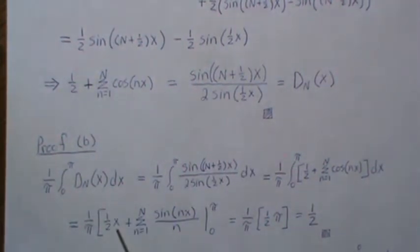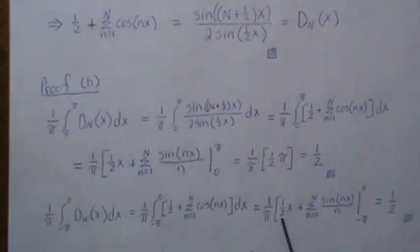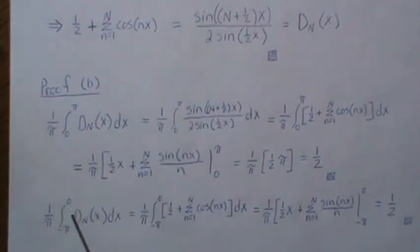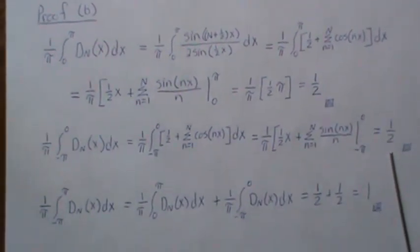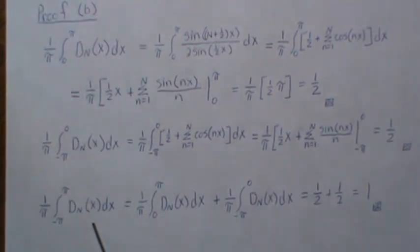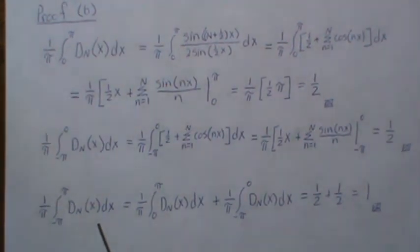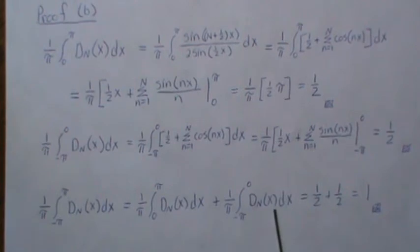Then we can do the same thing for the other piece of the integral, so from negative π to zero we integrate it and we get one-half. So that implies that if we integrate over the entire region but break it into these pieces, and we just showed each one of those is a half, then it integrates to one.